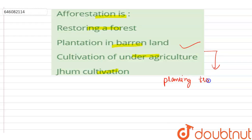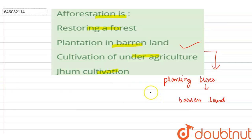Afforestation is the process of planting trees or sowing seeds in a barren, empty land devoid of any trees, to create a forest. This term should not be confused with reforestation, which is the process of specifically planting native trees into a forest that has a decreasing number of trees.